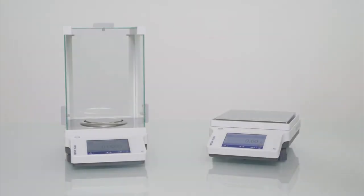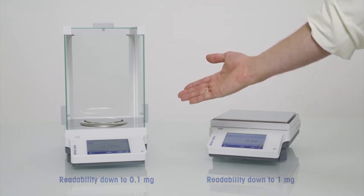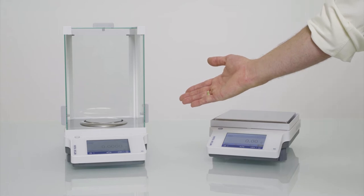The balance on the right side is an example of a precision balance. Precision balances have readabilities of down to 1 mg. On the left side you can see a MET analytical balance. Analytical MET balances have a readability of down to 0.1 mg.